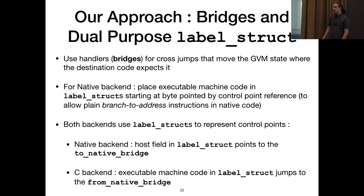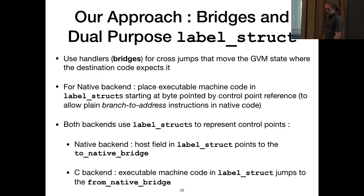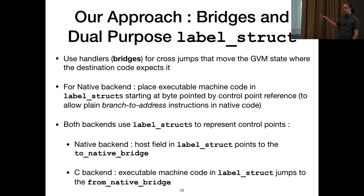For the native back-end, we add the host field which contains the address of the to-native-bridge function. So when the trampoline calls a native function, it executes the to-native-bridge, which can then move the processor state and resume execution. For the C back-end, we add some machine code where the reference points, so that when native code calls a C label structure, that code gets executed and simply calls the from-native-bridge.